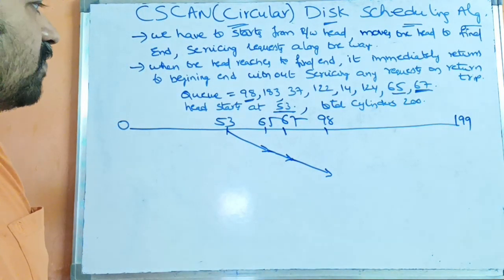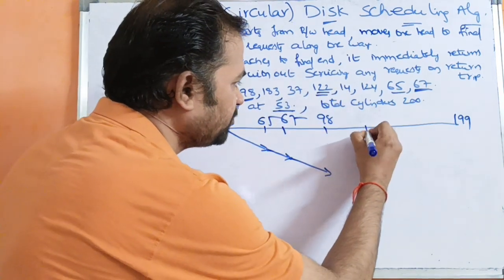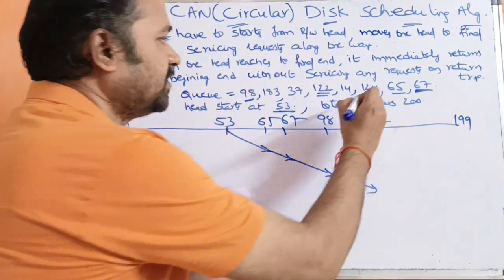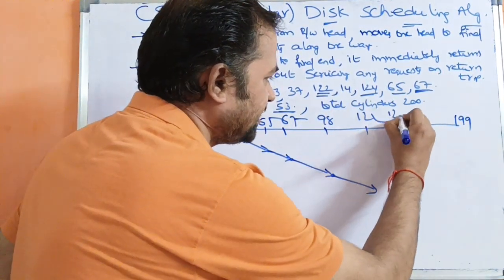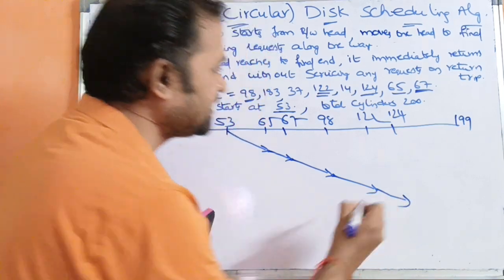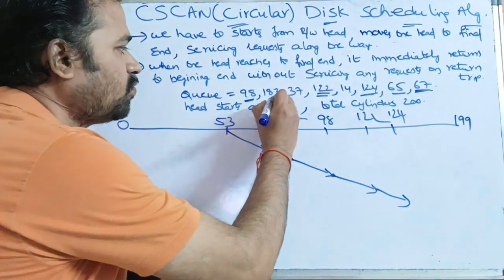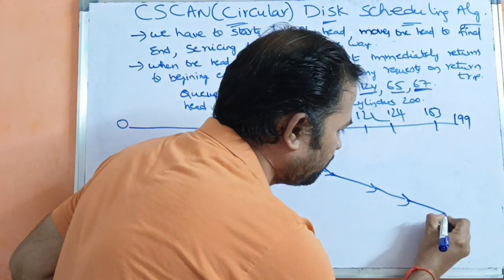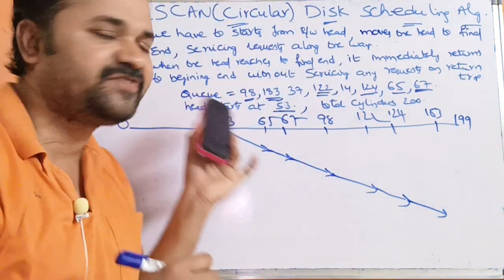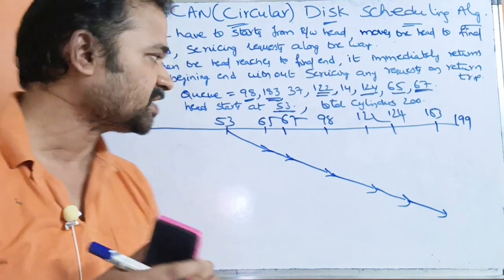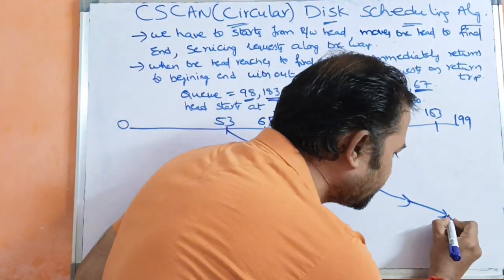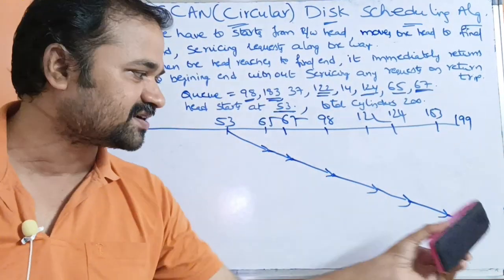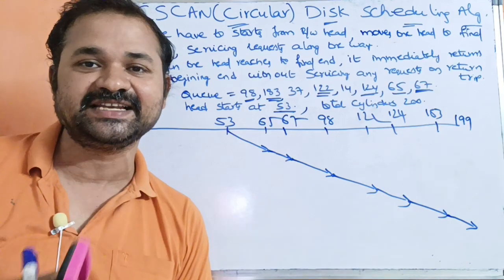After 98, we have 122, so we access the content of cylinder 122. Next we have 124, and we access the content of 124. Then we have 183, and we access the content of cylinder 183. Now we need to reach the final end of the disk, which is 199. So the read-write head is now at 199, the last cylinder.